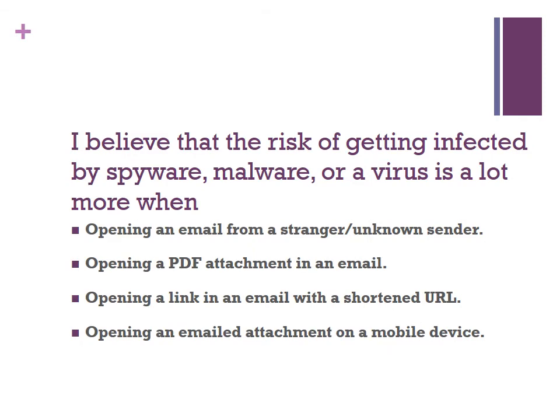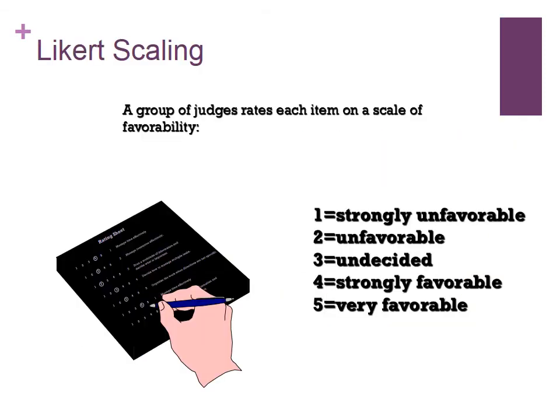Once you come up with your items, the next step in Likert scaling is to ask a group of judges to rate each item on a scale of 1 to 5. What the judges are doing is rating the favorability of the item — not giving their personal perception of risk, but rating the fit between the item and the construct definition. If a judge thinks the statement very accurately reflects the underlying construct, they say 5 (very favorable); if not, they say 1 (very unfavorable).